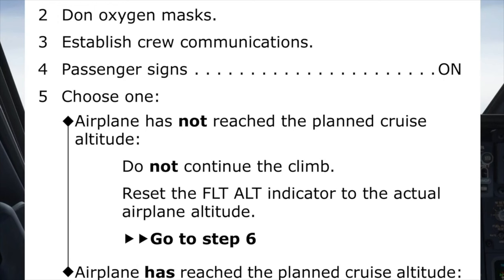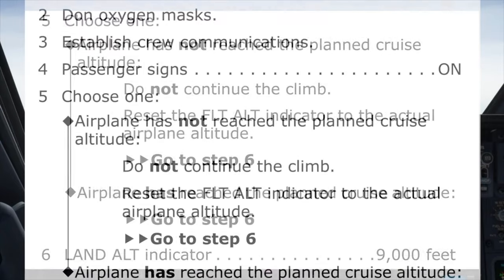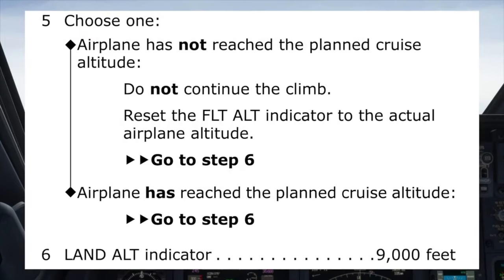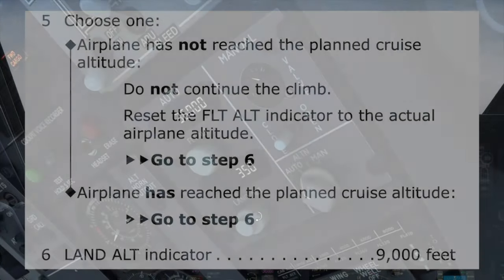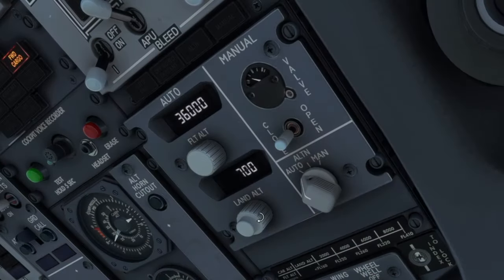Step five asks if we have reached the planned cruise altitude or not. We are at our planned cruise altitude of 36,000 feet, so we choose the second condition path, which has us go to step six. Step six directs us to set the landing altitude indicator to 9,000 feet.